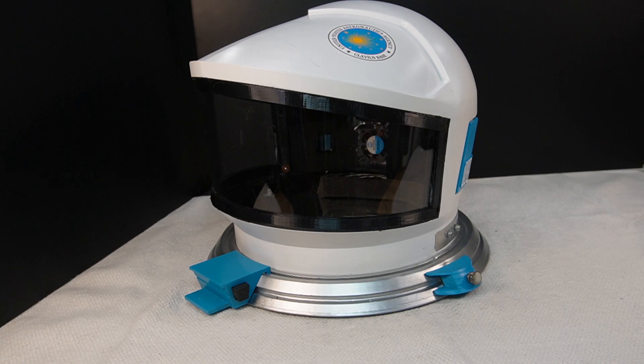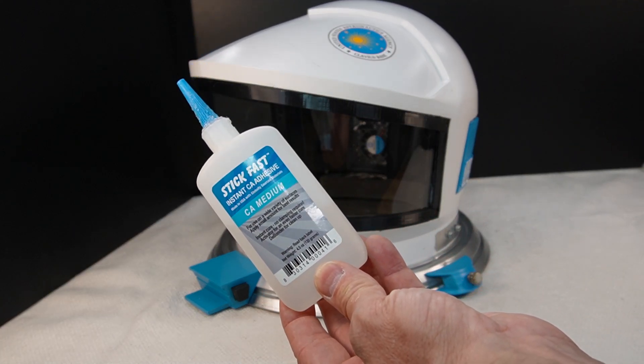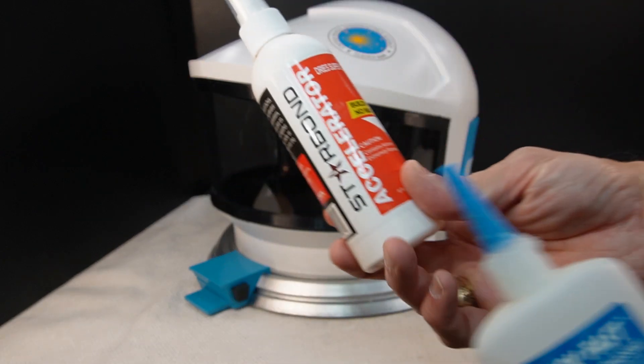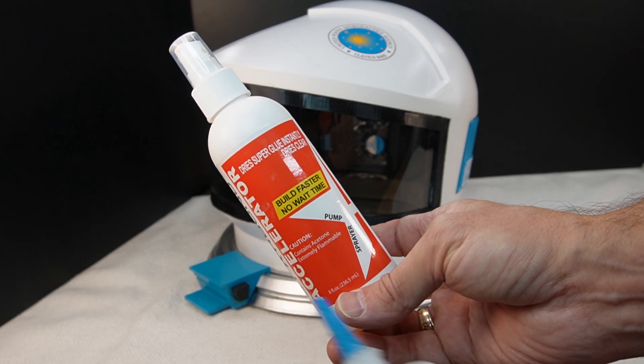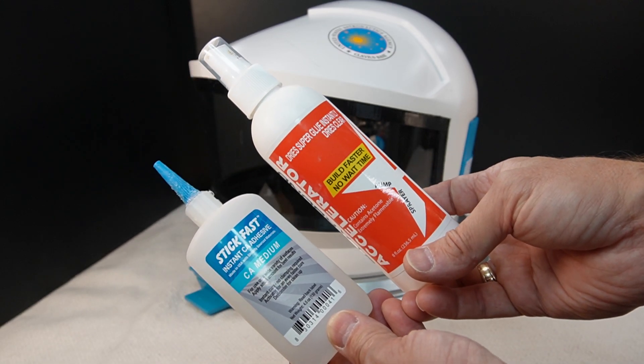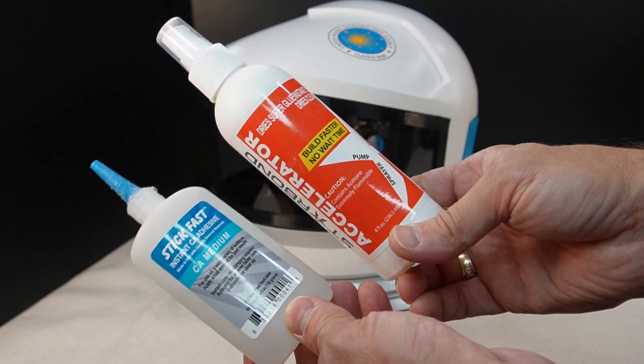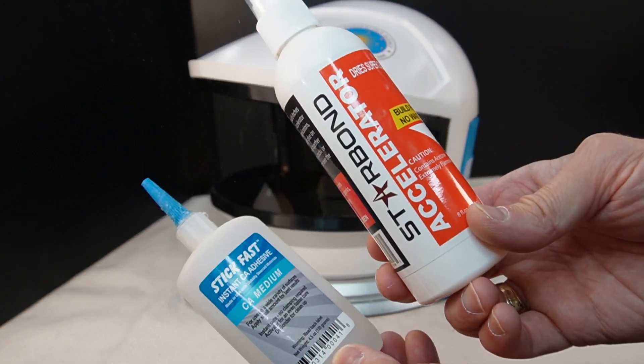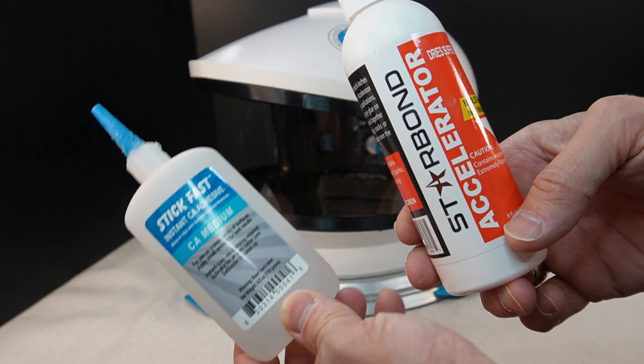The other glues that I use for gluing this visor frame in is CA glue with a medium setup time, and then I use an accelerator on parts that I just really want to make sure get bonded very quickly. The accelerator is really nice for small parts so you don't have to wait for the CA glue to take hold.